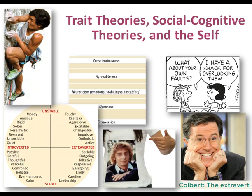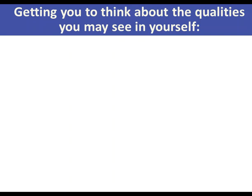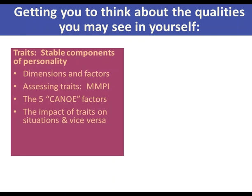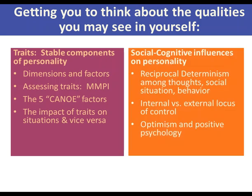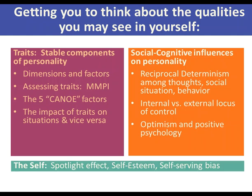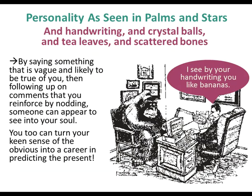Now we turn to trait theories, social cognitive theories, and the self. Traits are stable components of personality — dimensions and factors — assessed through tools like the MMPI and the Big Five factors. We'll also look at social cognitive influences, including reciprocal determinism among thoughts, social situations, and behavior; internal versus external locus of control; and optimism and positive psychology.